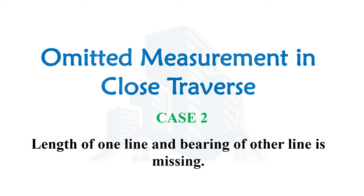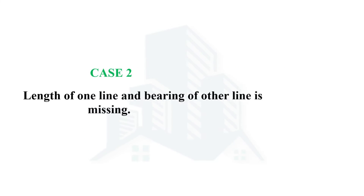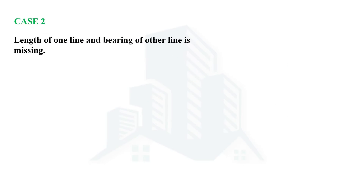Welcome everyone. In this video we are going to discuss case number two of omitted measurement in closed traverse, when the length of one line and the bearing of another line is missing. Let's discuss this second case in which the length of one line was not measured and also the bearing of another line was not measured — or we can say it was not possible to measure them.